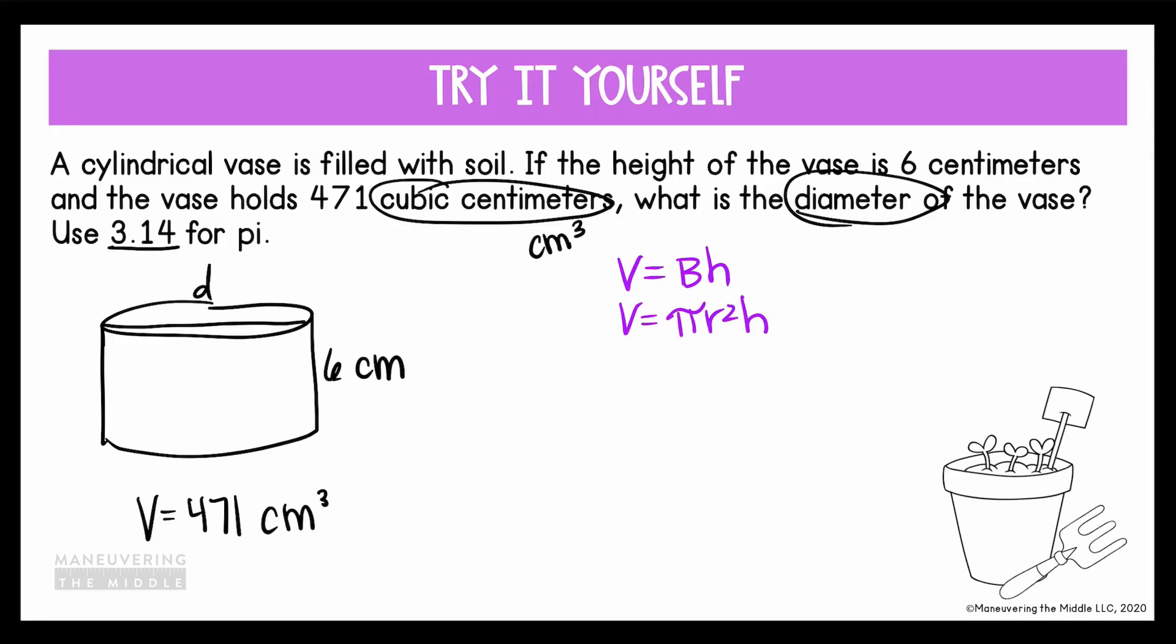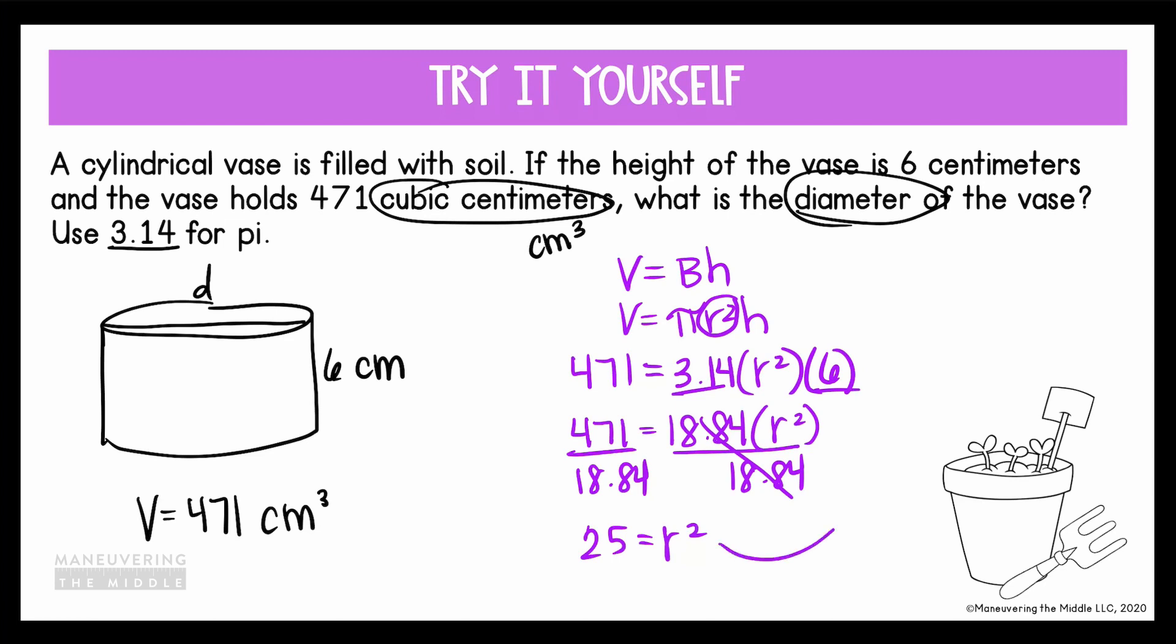And then as we've done in the previous problems, we're going to substitute in any variable that we know. So starting with V, we know the volume. So we can write 471 in place of V. We know that for pi, they want us to use 3.14, so let's write that here. We don't know the radius, so I'm gonna leave that alone as R squared. And we know the height is 6. So let's start solving for R. And I'm gonna multiply everything on the right that I can. I can multiply 3.14 times 6, which gives me 18.84 times R squared. We wanna undo this multiplication, so divide both sides. That will cancel the value on the right. And then on the left, it's gonna give us 25 equals R squared.